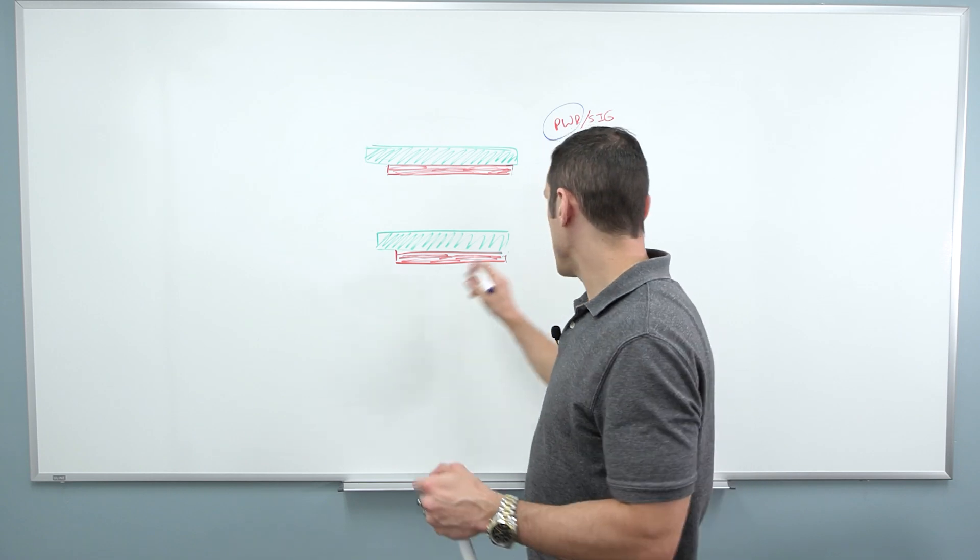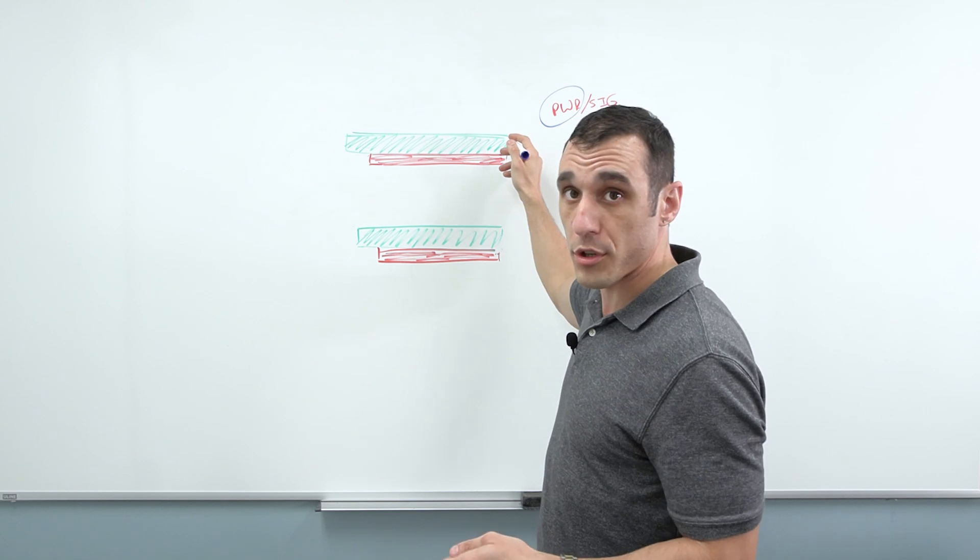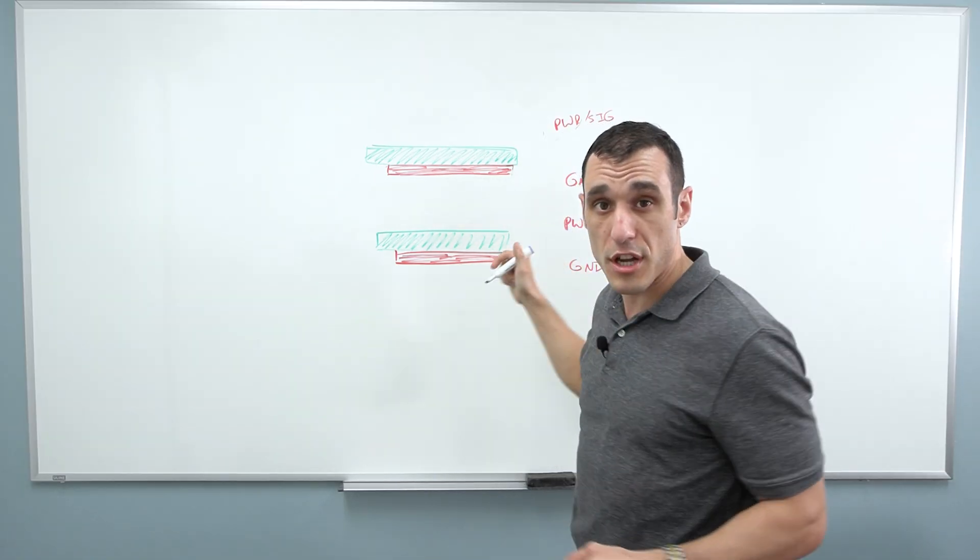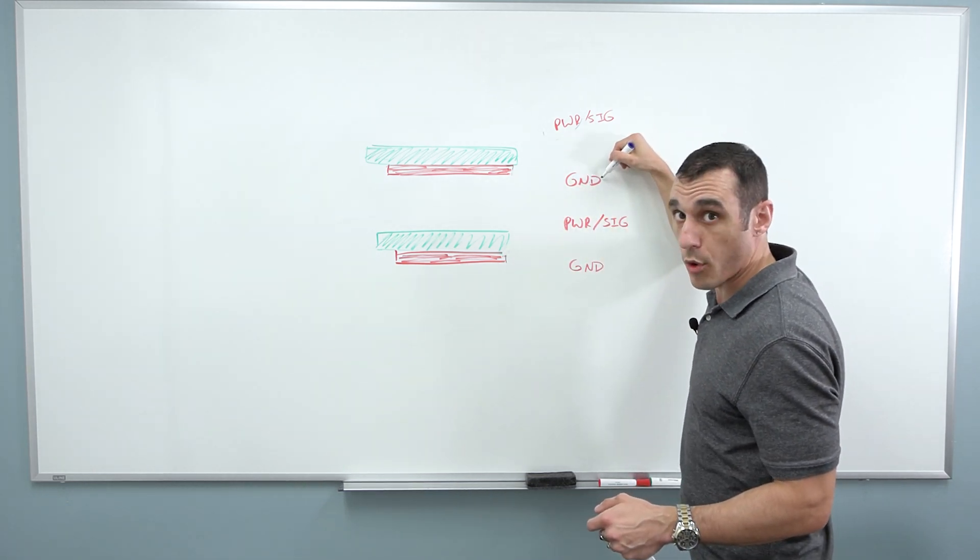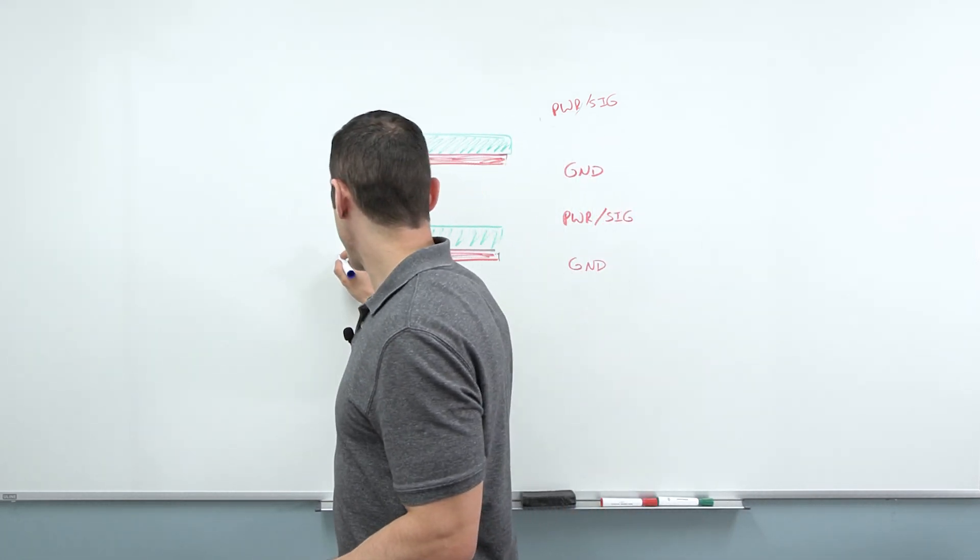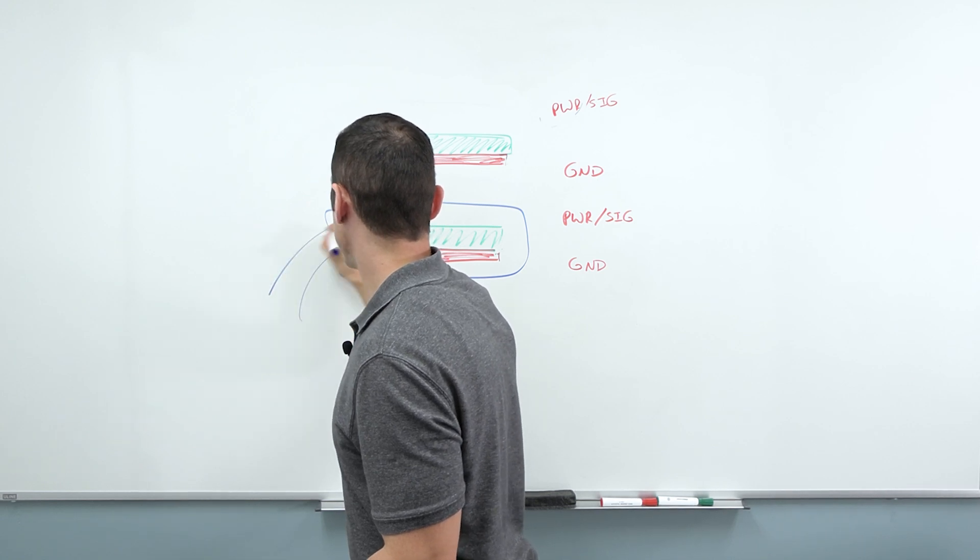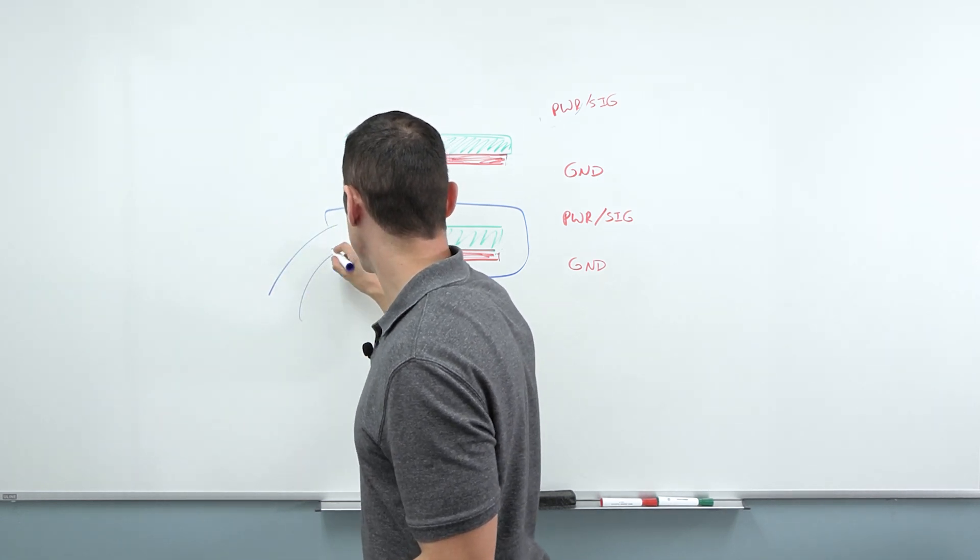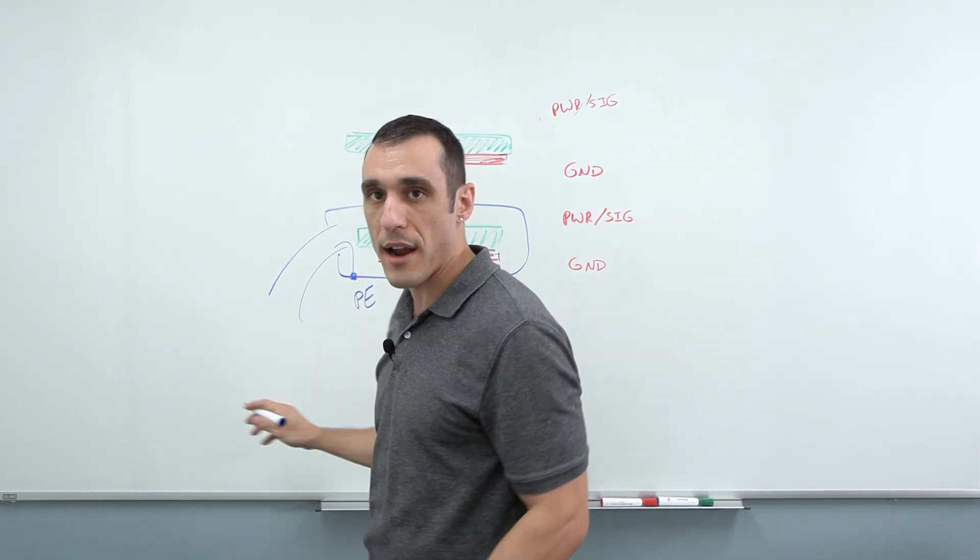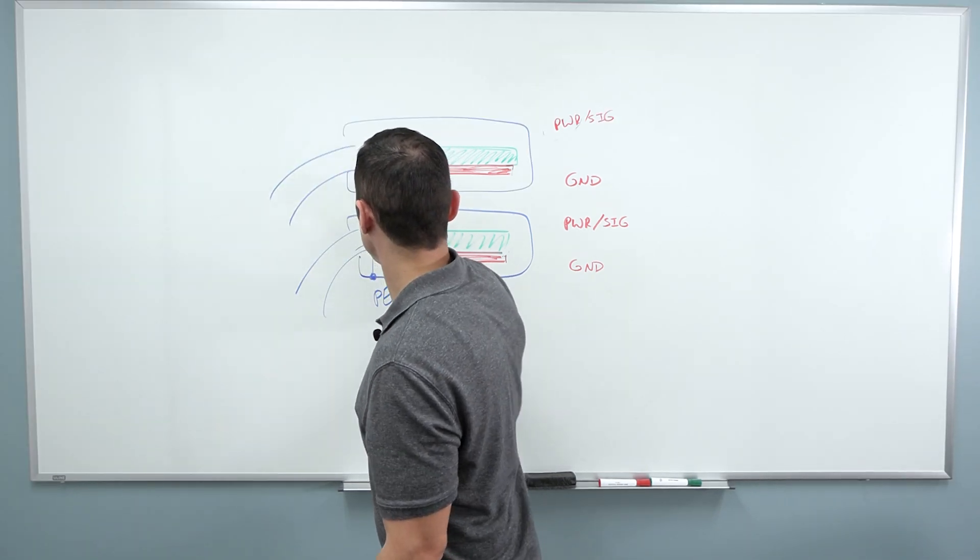There is also a case where maybe board two receives its own power and then you don't have to actually route in power from board number one. So we don't need to worry about this. Still, there's the question of, do I need to actually route my ground between board one over to board two? So let's look at a case here where I have board two in its own enclosure and we have power coming in. Let's just assume for a moment that this is three wire DC. So there's a protective earth connection. And then same thing over here.